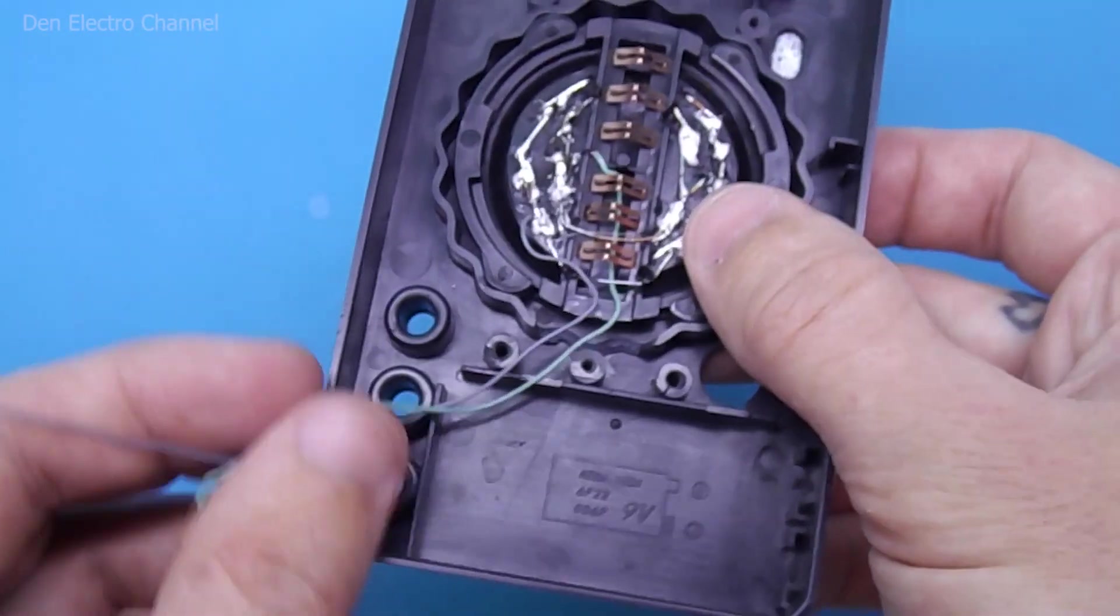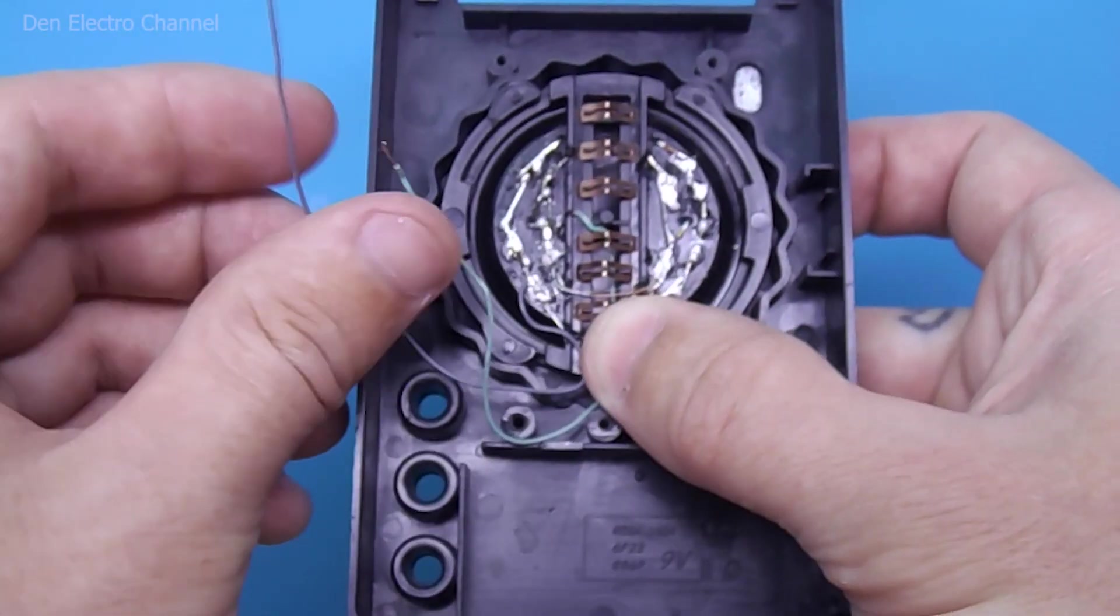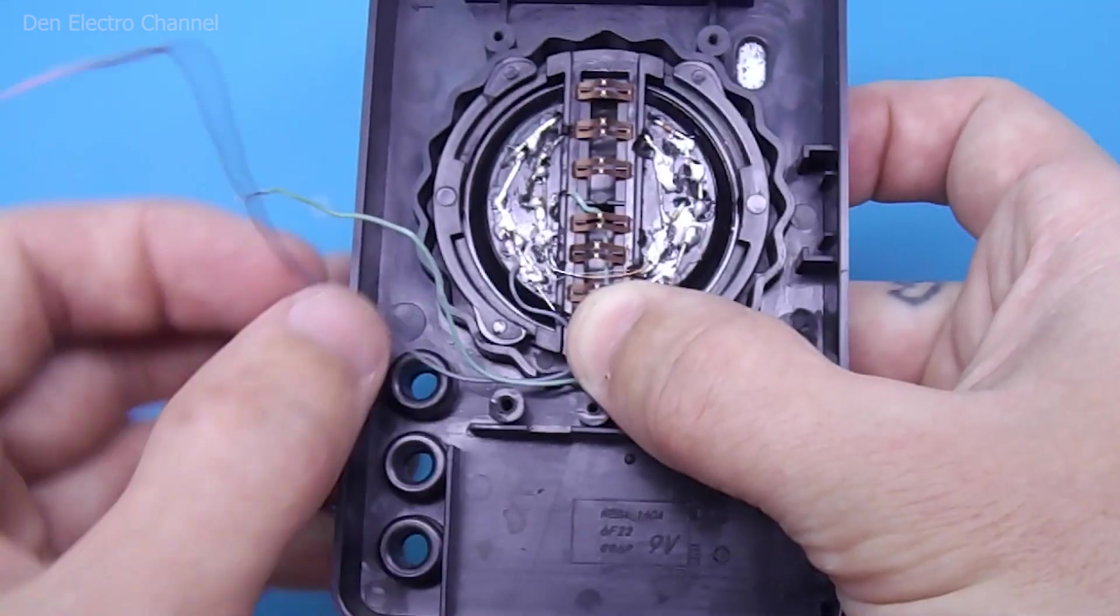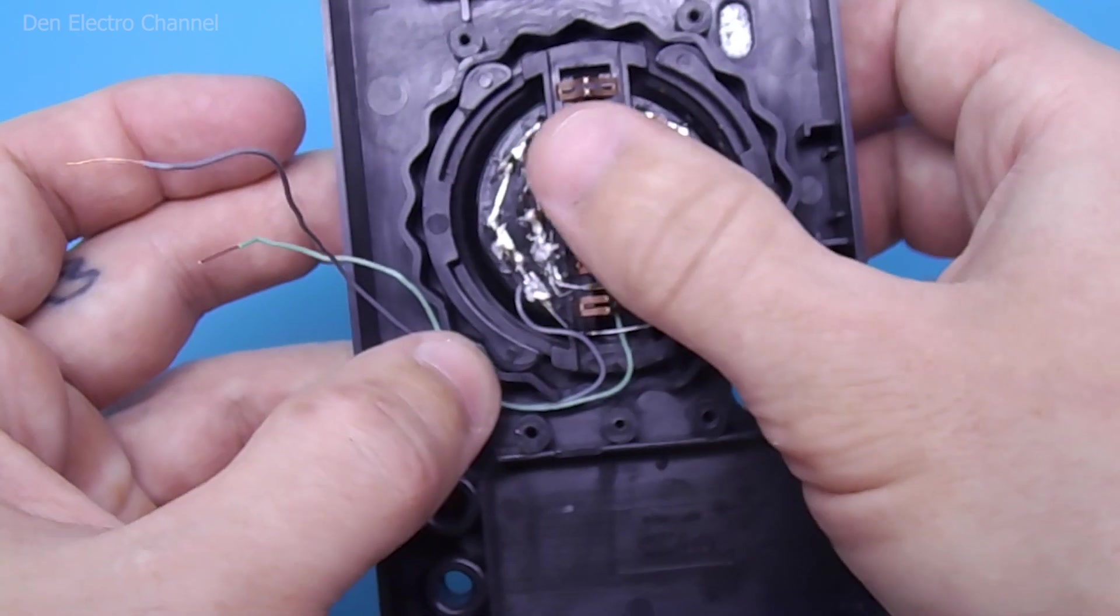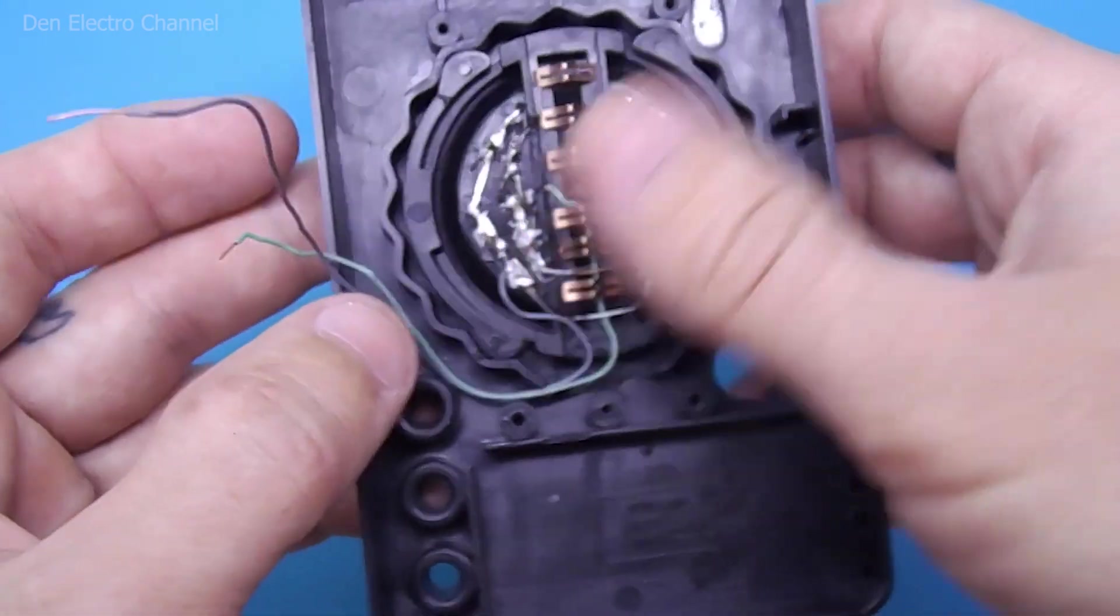We lay the wires in the place where the wall is broken off. The wires need to be thin and soft. When the regulator rotates, they should not create resistance.